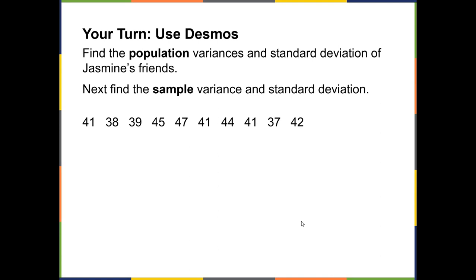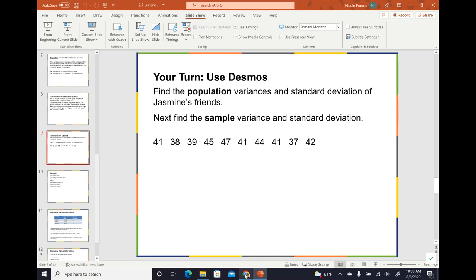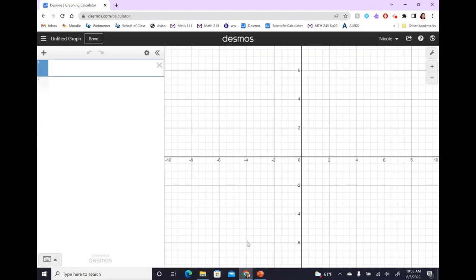All right. Now we're going to use Desmos to calculate population variances and standard deviation, and also sample variances and standard deviation. We're going to start from a completely blank Desmos graphing calculator screen, so you can see exactly how to do this by hand. So let's get out of PowerPoint here, maybe. There we go. And go to your web browser and go to Desmos scientific calculator, so desmos.com backslash calculator.